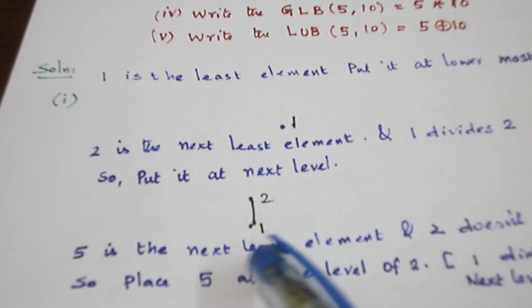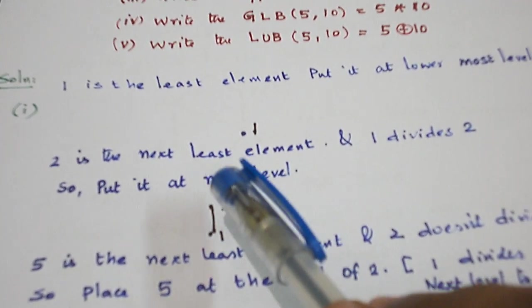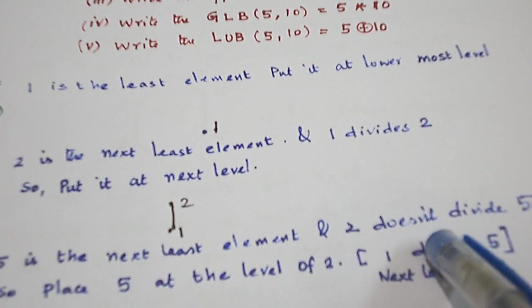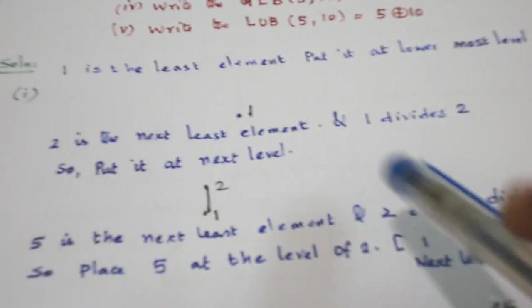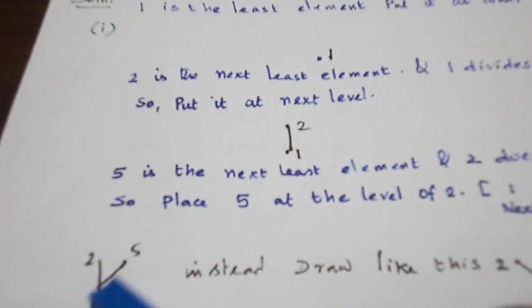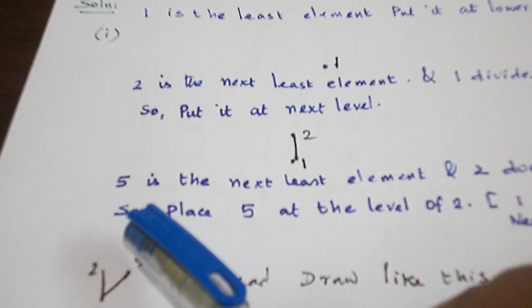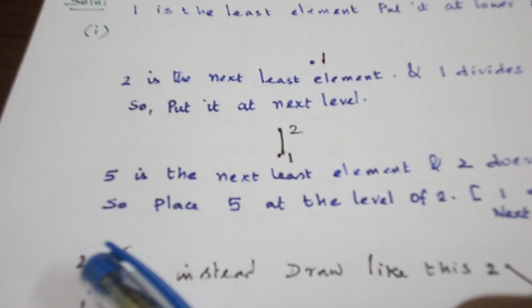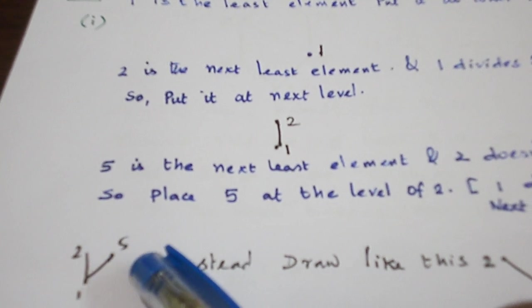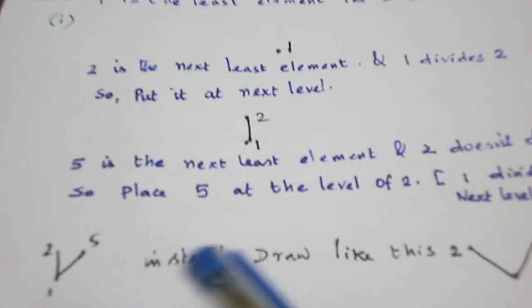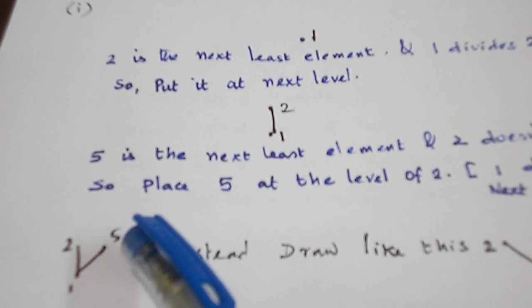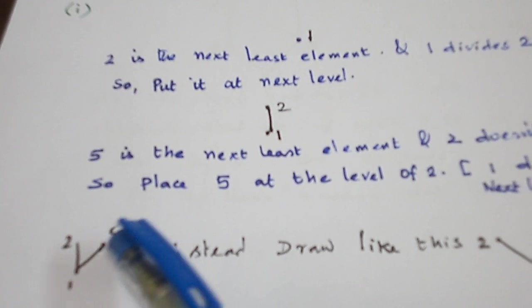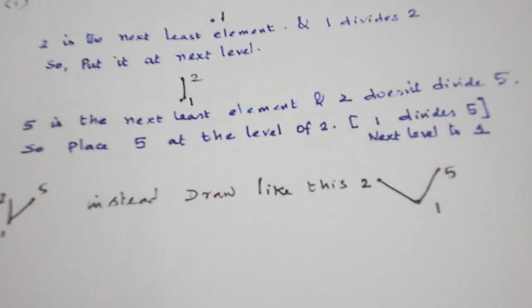The next least element is 5. But 2 does not divide 5, so we cannot place 5 above the level of 2. So place the element 5 in parallel to 2. And 1 divides 5 — that is represented by this line. Instead of drawing straight, I draw it like a V shape.